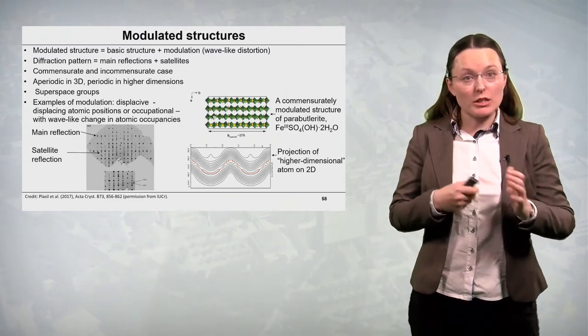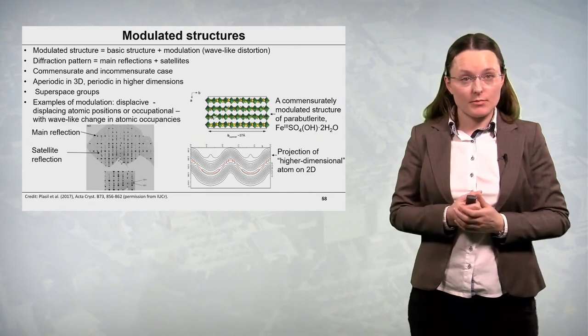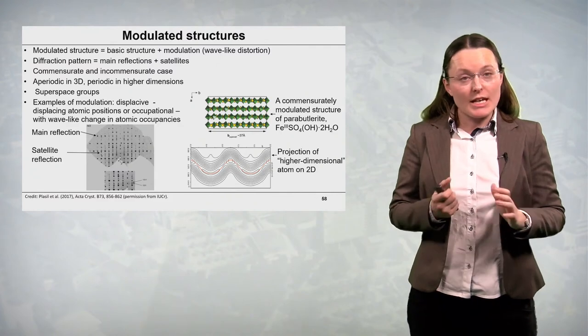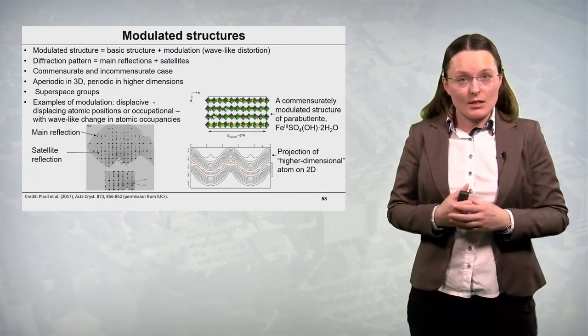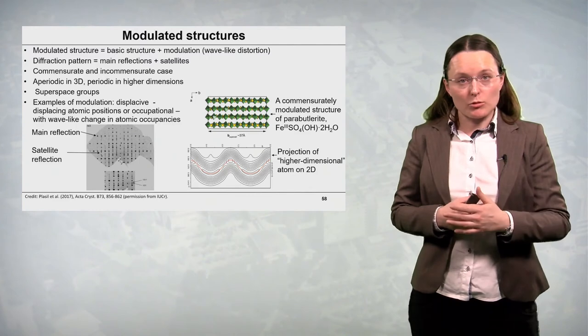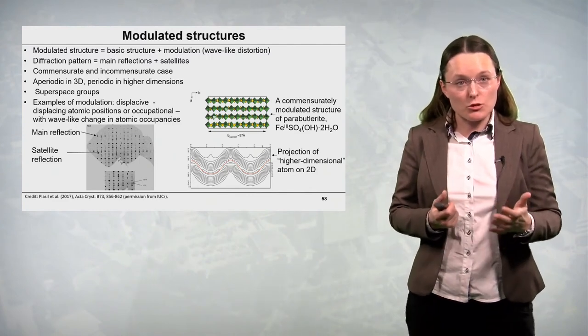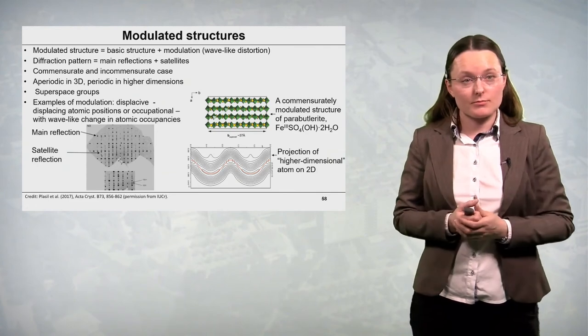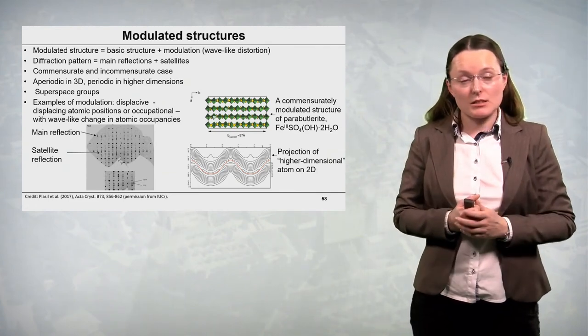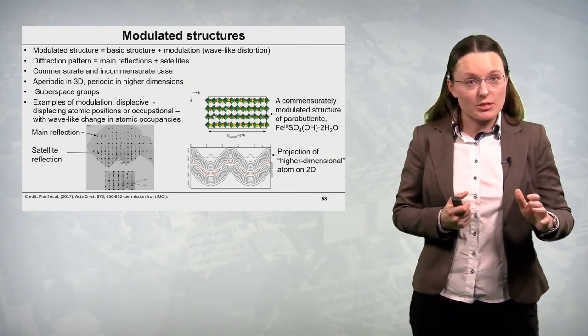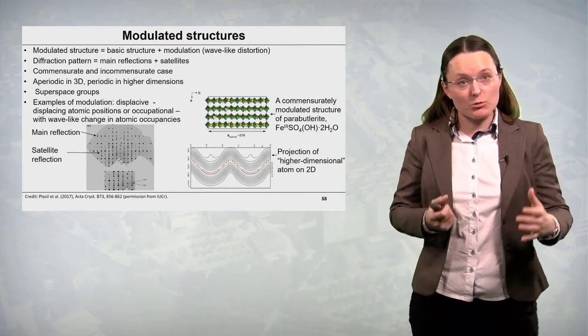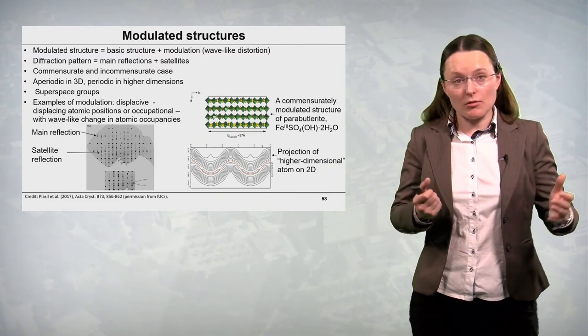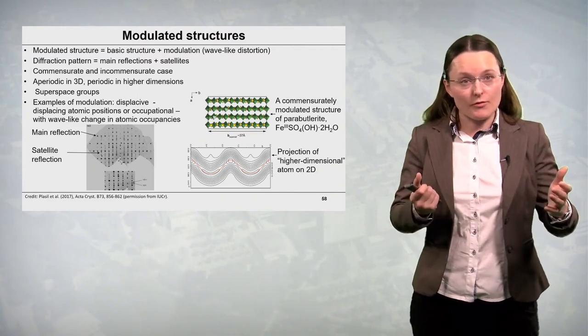Commensurate or incommensurate case. Commensurate modulated structure has a feature that the modulation wave is commensurate with the identity period of the crystal structure. So as a result we could describe this crystal structure in a bigger unit cell. And then we can use all the arsenal of the methods of classical crystallography.